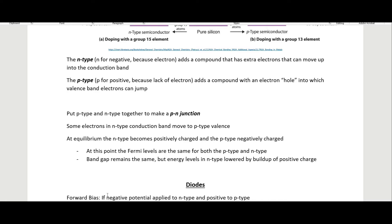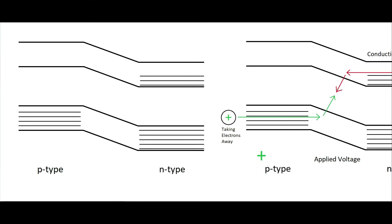In a p-n junction, some electrons in the n-type conduction band move into the p-type valence band so that at equilibrium the n-type becomes positively charged and the p-type negatively charged. When you put these two together, the extra electrons from the n-type move to fill the holes in the p-type, generating a positive charge on one side and a negative charge on the other at equilibrium.